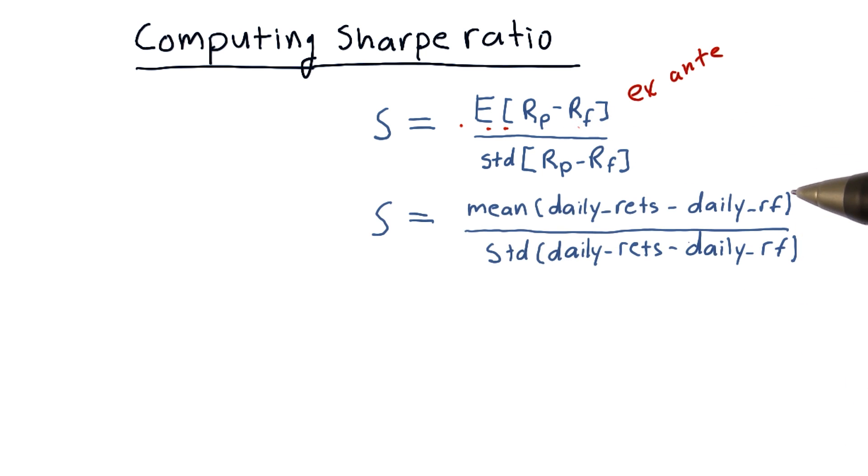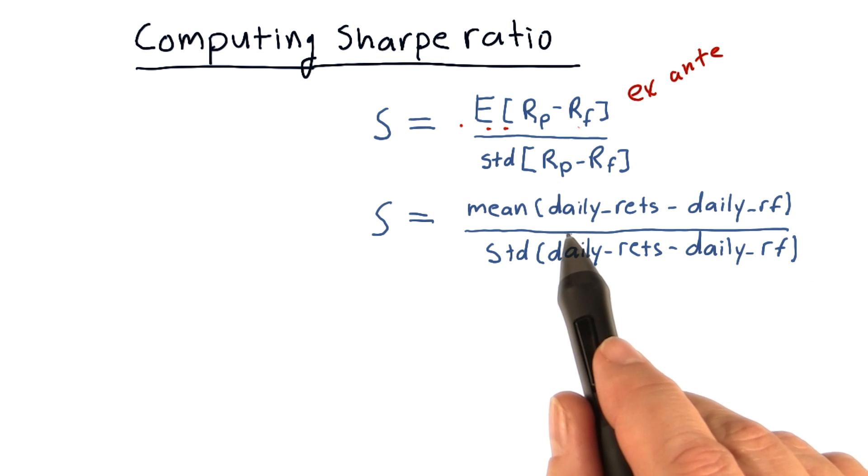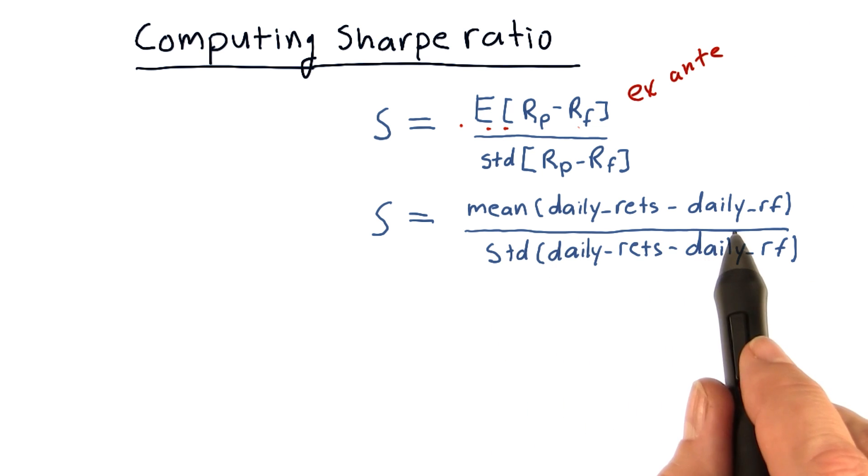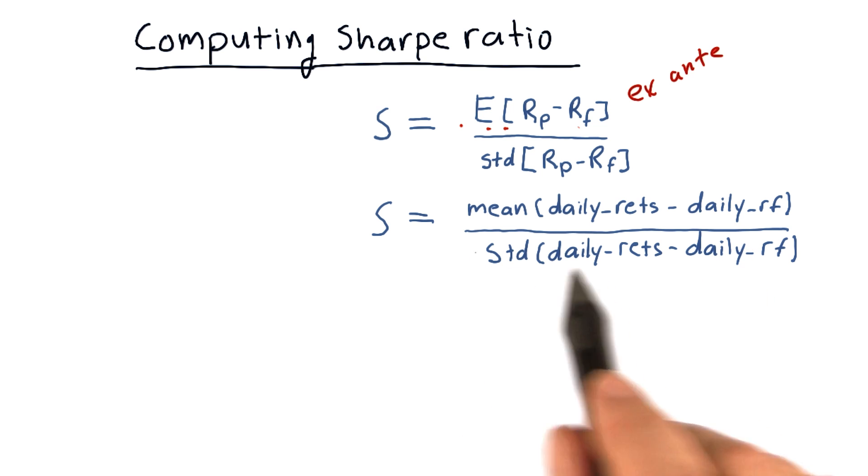So to calculate this in Python using historical data, we just take the mean of daily returns minus the daily risk-free rate and divide that by the standard deviation of the daily returns minus the daily risk-free rate.